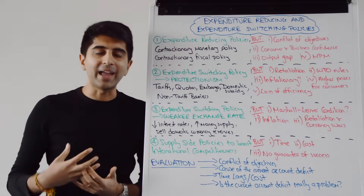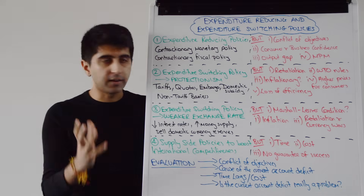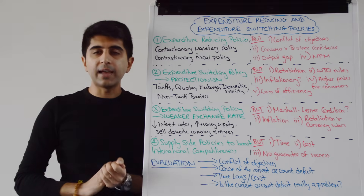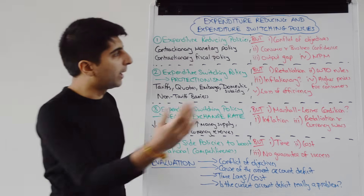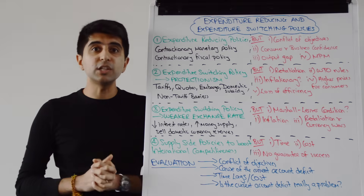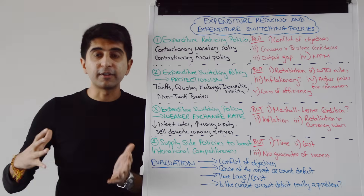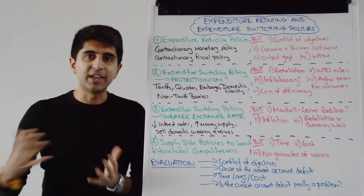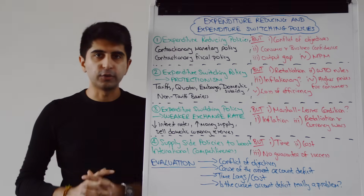Could consumer and business confidence be so high that aggregate demand does not fall if interest rates rise or if taxation levels increase? That's a nice evaluative point. Considering the level of the output gap: if the economy is already at full employment and AD shifts left, there is no guarantee that incomes are going to decrease at all — we might still be at the full employment level of output. You also have to question the marginal propensity to import. If it is not very high in the economy, then these policies are not necessarily going to reduce import expenditure enough to make an impact on closing the current account deficit.